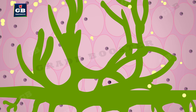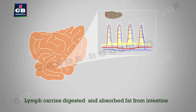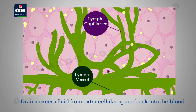and finally opens into large veins. Lymph does two major jobs: one, it carries digested and absorbed fat from the intestine, and two, it drains excess fluid from extracellular space back into the blood.